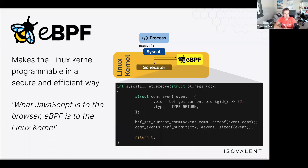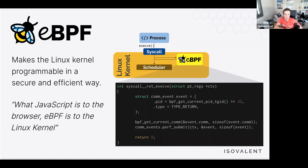eBPF in one minute. eBPF is the powerful technology driving Cilium underneath — you don't need to understand it to use Cilium, but it's the key enabler for what makes Cilium unique. eBPF is essentially a programmable engine at the operating system level, originally written for the Linux kernel, and now also ported to Windows. Similar to how JavaScript makes a browser programmable, eBPF makes the Linux kernel programmable — running programs when network packets are processed, system calls happen, or applications call certain functions.